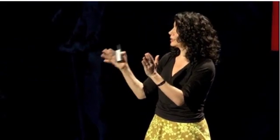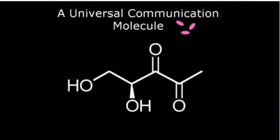Bacteria are able to count how many of 'me' and how many of 'you,' and they take that information inside and decide what tasks to carry out depending on who's in the minority and who's in the majority of any given population. We turned to chemistry and figured out what this generic molecule is — that was the pink ovals on my last slide. It's a very small five-carbon molecule, and every bacterium has exactly the same enzyme and makes exactly the same molecule. So this is the bacterial Esperanto.